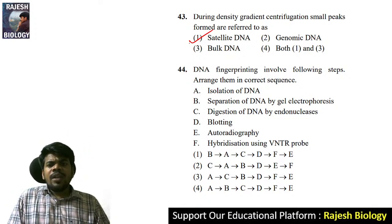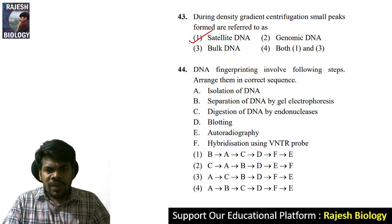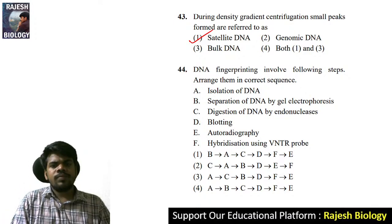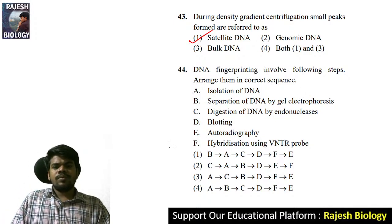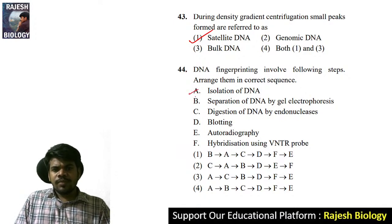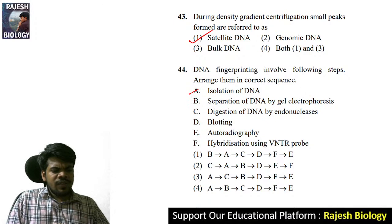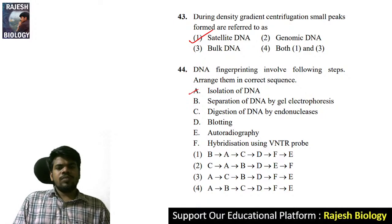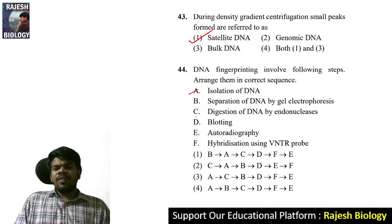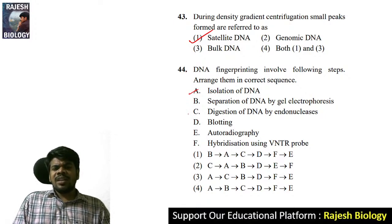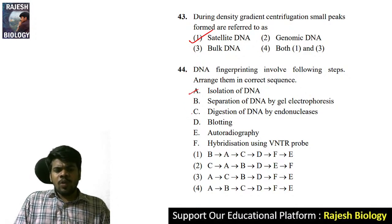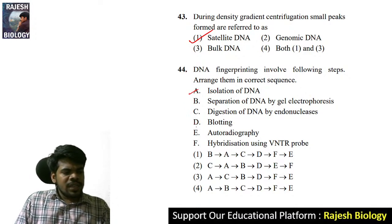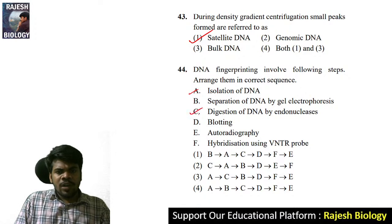Question 45: DNA fingerprinting involves the following steps — arrange them in the correct sequence. First is isolation of DNA. Then digestion of DNA by endonucleases — they cut the DNA into fragments. Then separation of DNA by gel electrophoresis. Then blotting, then hybridization using a VNTR probe, and finally autoradiography.